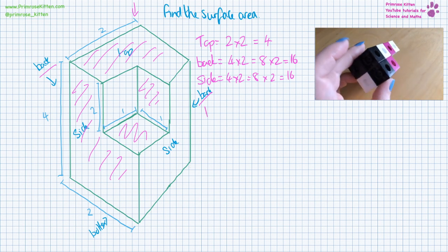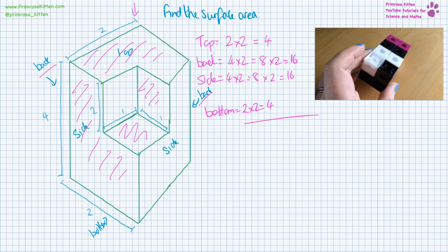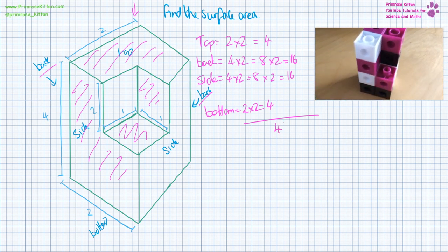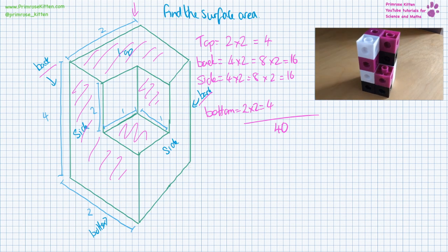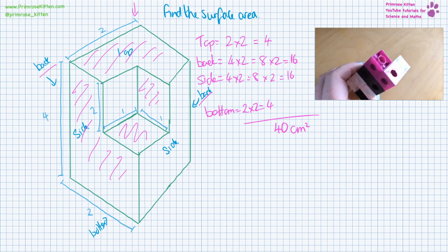Now the bottom is just the same as the top, 2 times 2 giving us 4. So the total we now have 4 plus 16 plus 16 plus 4 giving us a total surface area of 40. Now I haven't included any units in this but centimeters squared seems like a sensible one.